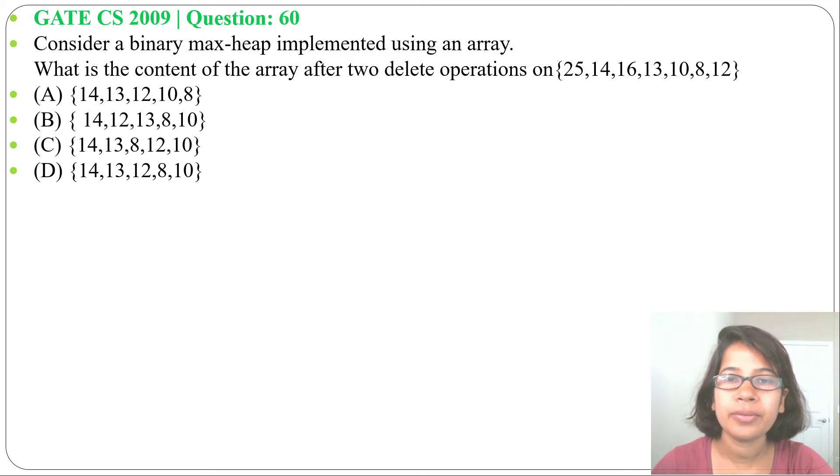Hi, let's have one previous question of heap. This question was asked in GATE CS 2009, question number 16. Consider a binary max-heap implemented using an array. What is the content of the array after two deletion operations on 25, 14, 16, 13, 10, 8, 12? Four options are given, so one array is given and it is asking after two deletions what will be the new array.